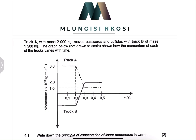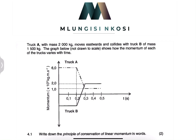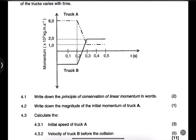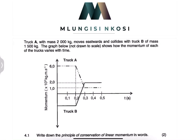We're looking at momentum and impulse. We are given that Truck A has a mass of 2000 kilograms and moves eastwards — that's very important. It collides with Truck B of mass 1500 kilograms. The graph, which is not drawn to scale, shows how the momentum of each of the trucks varies with time.